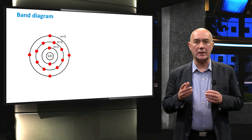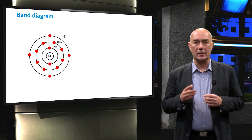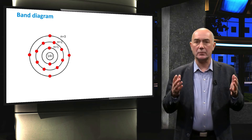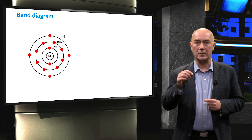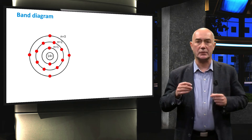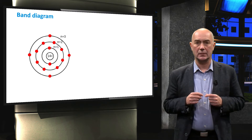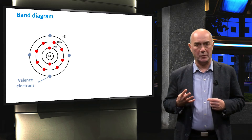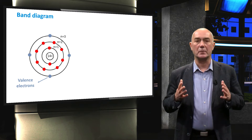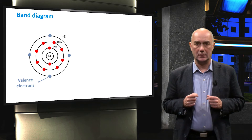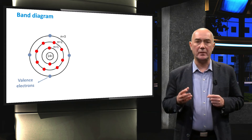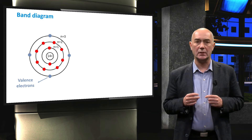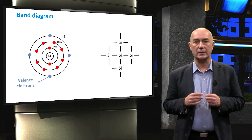We will start our discussion of the band diagram with the Bohr model of the silicon atom. In semiconductor materials, the outer shell of the atom, which is called the valence shell, is not completely filled. The outer shell of silicon contains four out of the possible eight electrons, which we call valence electrons. As we discussed in the previous video, each silicon atom in a crystalline structure is bonded to four other silicon atoms.